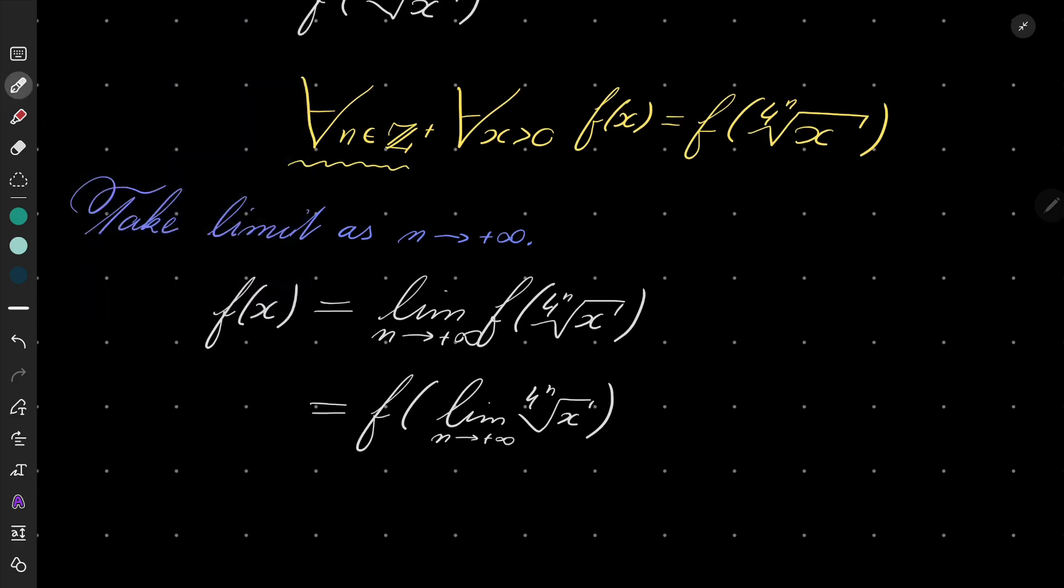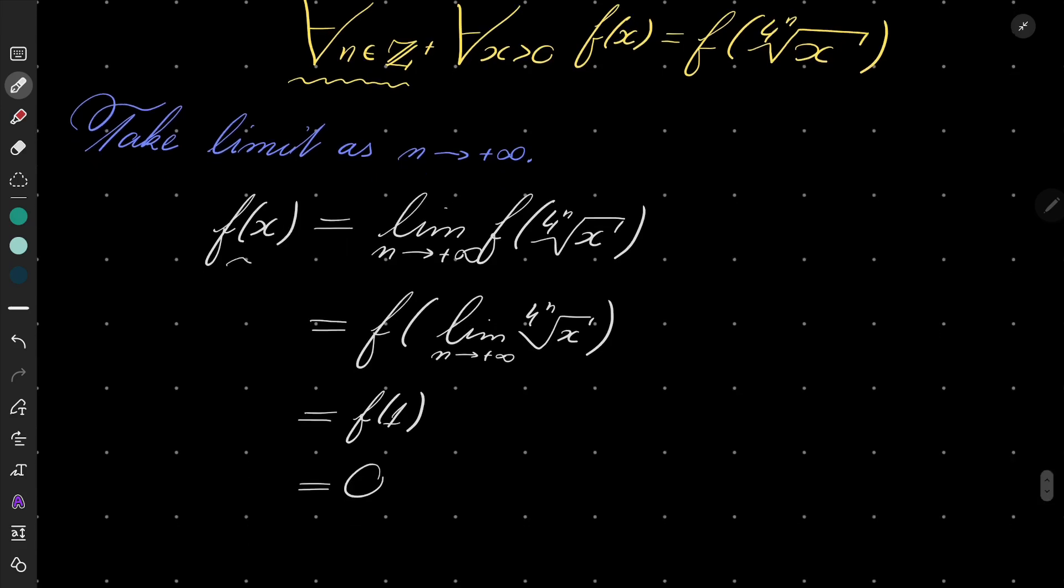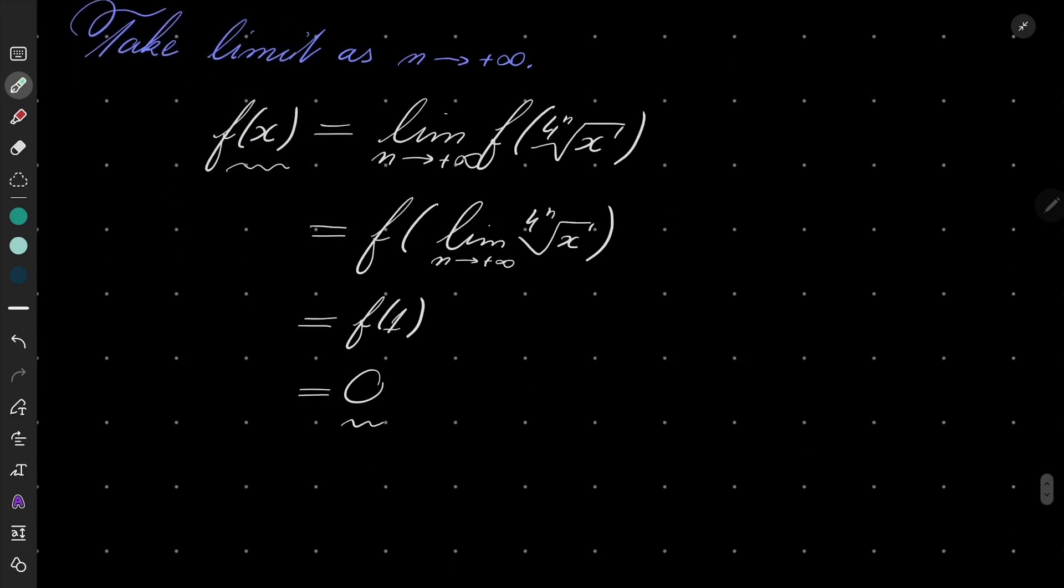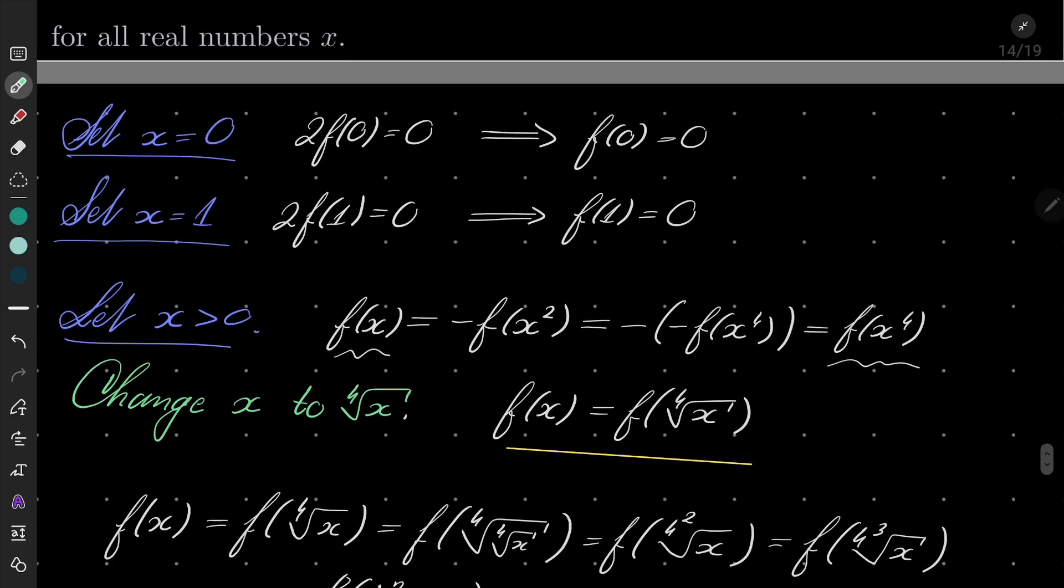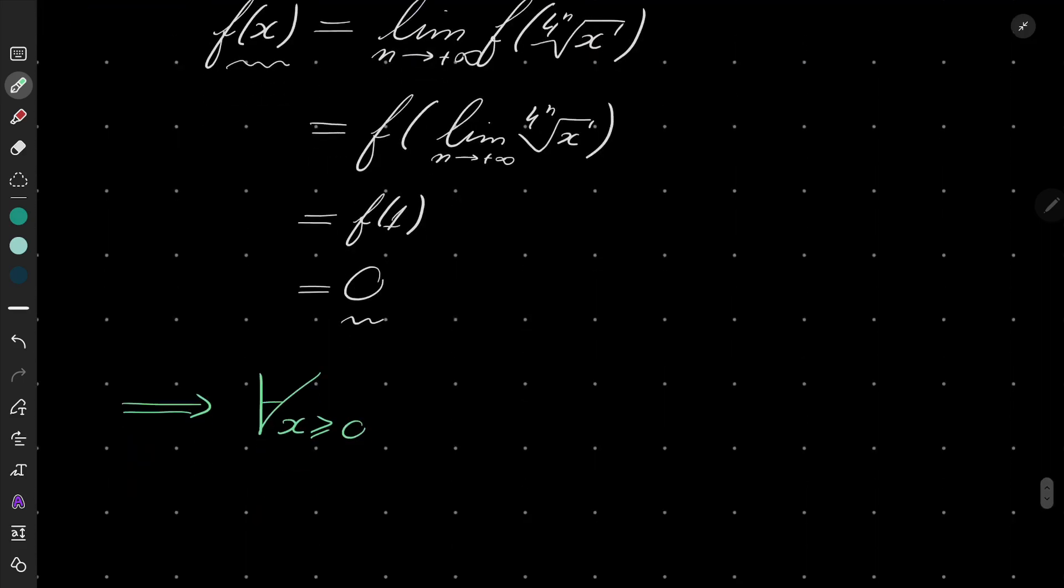Okay, and as I suggested, this limit, no matter what the x is, for every positive x, we will just have f of 1. And f of 1 is just 0, which means that our function is constantly 0 for positive real numbers. So let's write it. And also, for 0 as well, because we started our reasoning with the case of x equals 0, and f of 0 is also equal to 0. So now we know that for every non-negative x, f of x equals 0. We are halfway there.